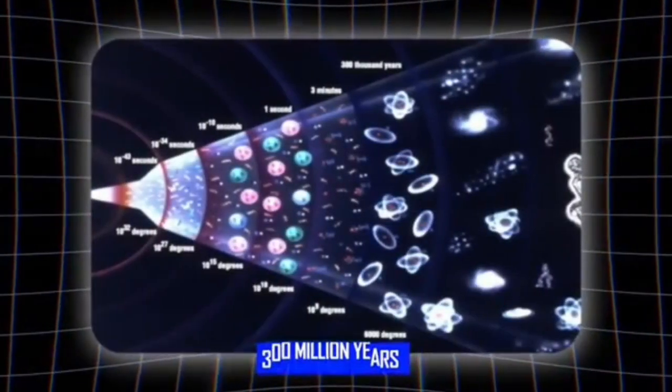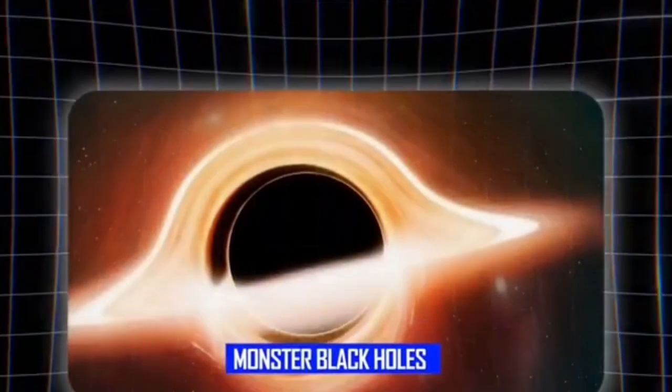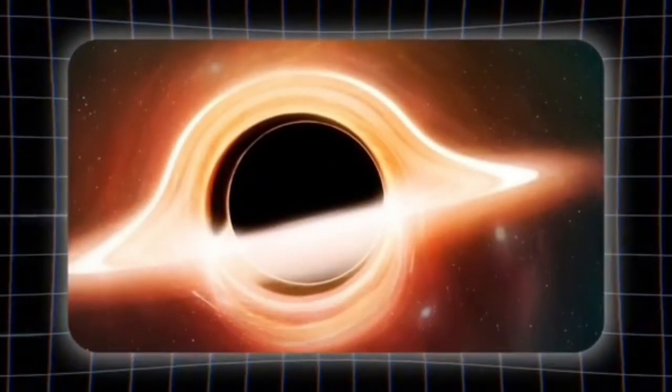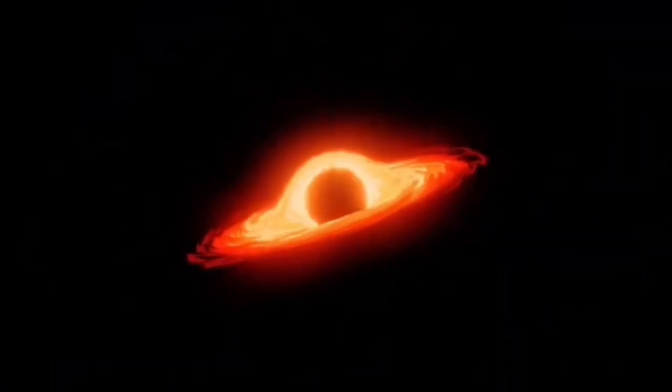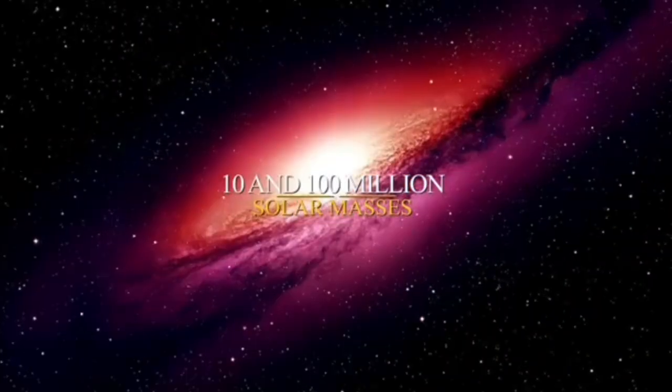As Caitlin Casey, who co-led the Cosmos Web Project, put it: the universe was producing too much light too early. It had only about 400 million years to form something like a billion solar masses of stars. We just do not know how to make that happen.